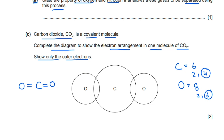With a double bond, carbon is sharing two electrons on both sides. The electrons of carbon are shown as crosses and oxygen's electrons are shown as dots. The bonding electrons are represented accordingly. This gives the complete dot-and-cross picture for CO₂.